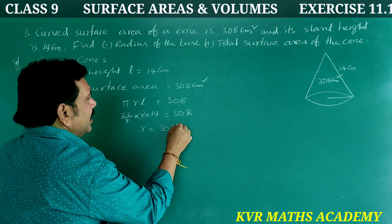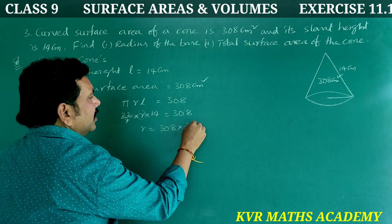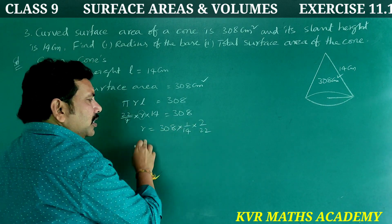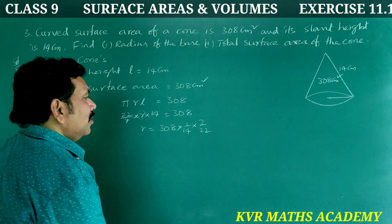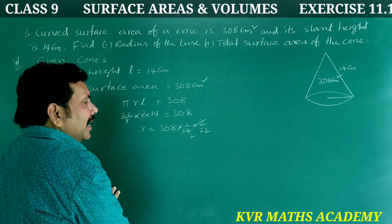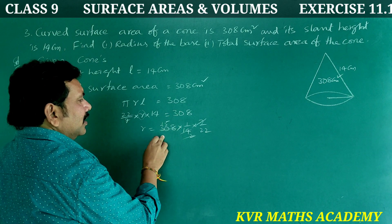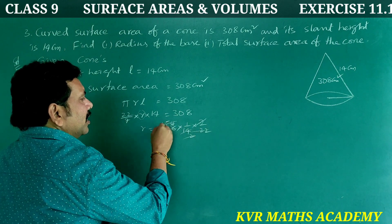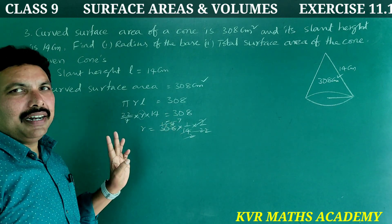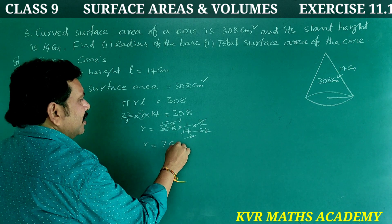R·L = 14. Rearranging: R = 308 × (7/22) × (1/14). Simplifying — 7 × 2 = 14, so the 14 cancels. Computing: 308 divided by 22 = 14, then 14/2 = 7. Therefore R = 7 cm.